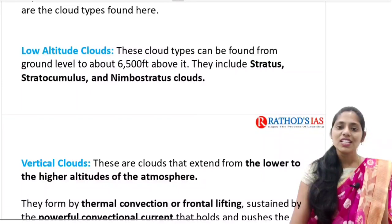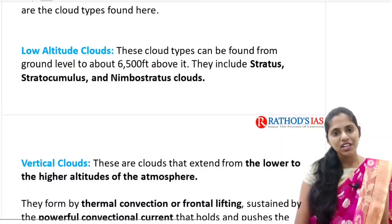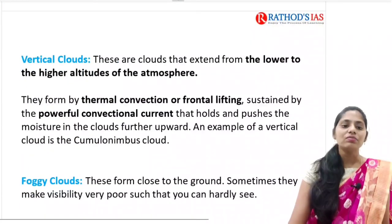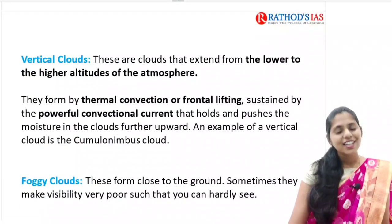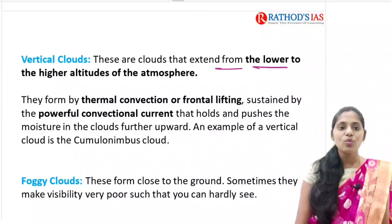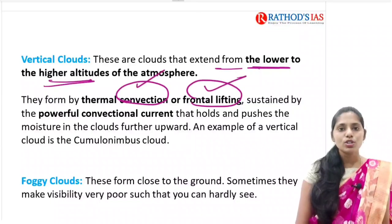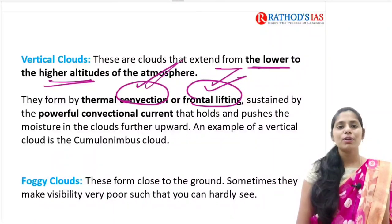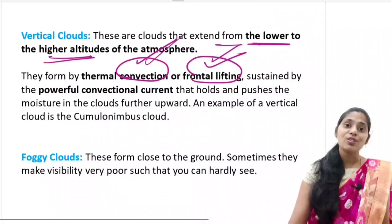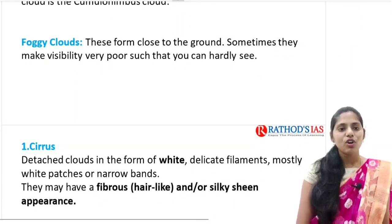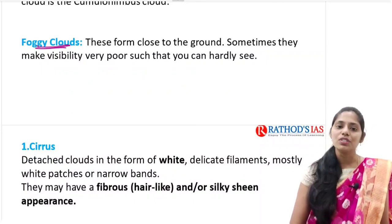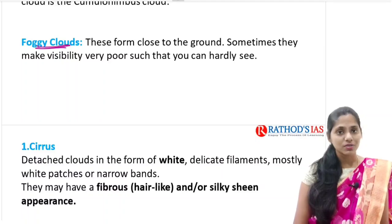Low altitude clouds are seen about 6,500 feet from ground level - we have stratus, stratocumulus, and nimbostratus. Vertical clouds include cumulus and cumulonimbus, which extend from lower to higher altitudes of the atmosphere. They are mainly caused by convection as well as frontal lifting, and are powerful because they cause heavy rainfall. We can also see foggy clouds at ground level, which decrease visibility - in Delhi we can see such foggy clouds forming.